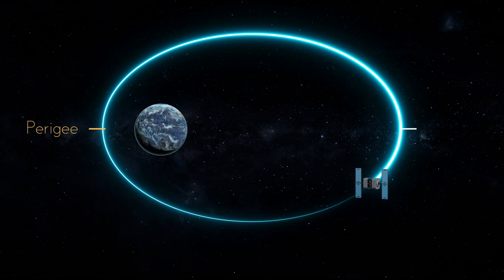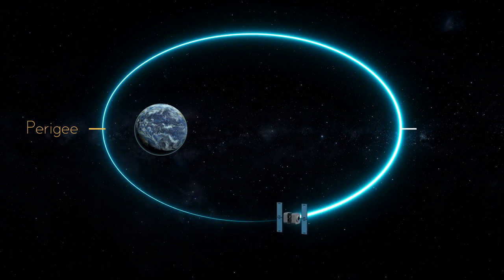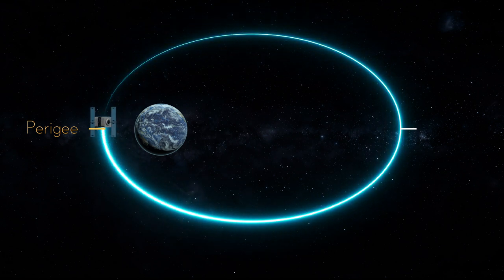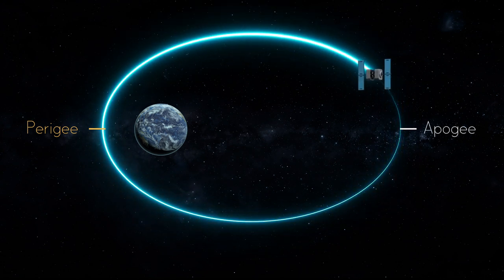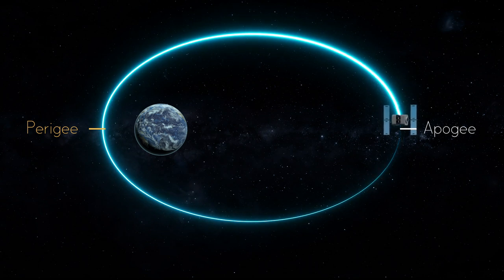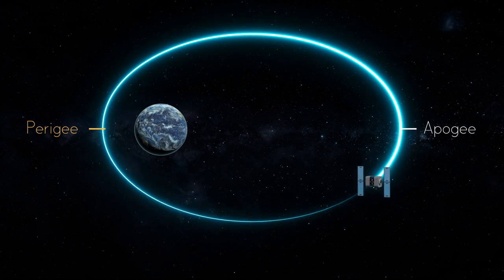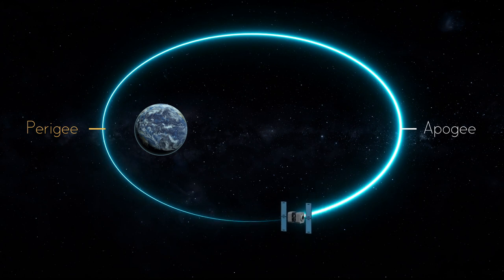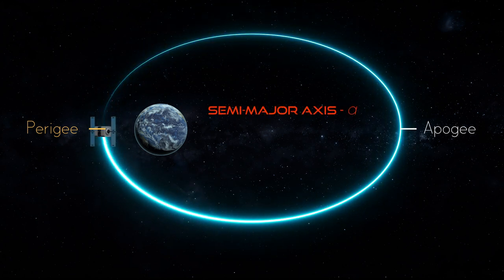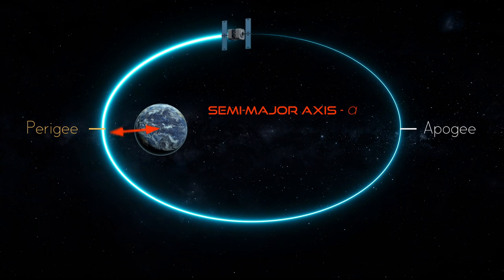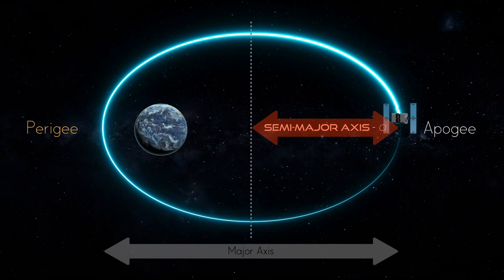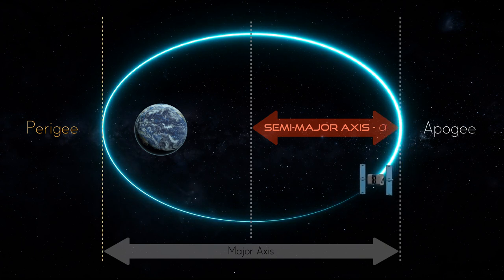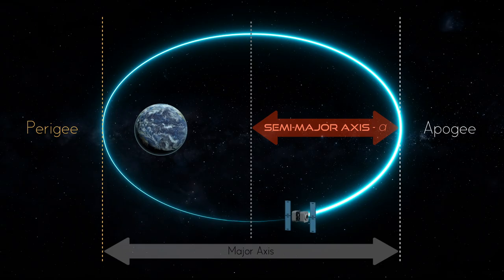Perigee is the point on the satellite's orbit where it's closest to the Earth, and it's also where the satellite is traveling the fastest. Therefore, semi-major axis is defined as the average of the two distances, perigee and apogee. But this can be more simply stated as just half the major axis, where the major axis is the distance from apogee to perigee. So semi-major axis tells us the size of the orbit.